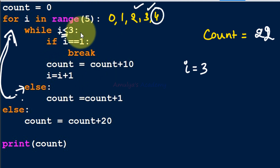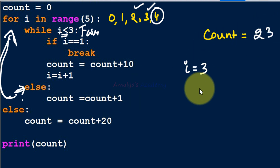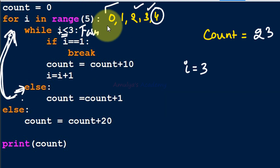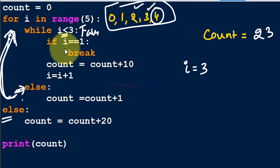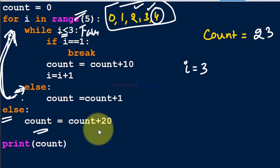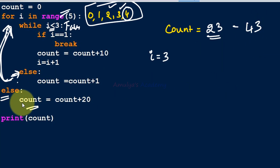Control goes back to the for loop and i is now 4. We check while 4 < 3 — false — so the while loop ends and its else block executes, making count 23. Now the for loop's range is exhausted, so control exits the for loop and executes the for loop's else block: count = count + 20, so 23 + 20 = 43.